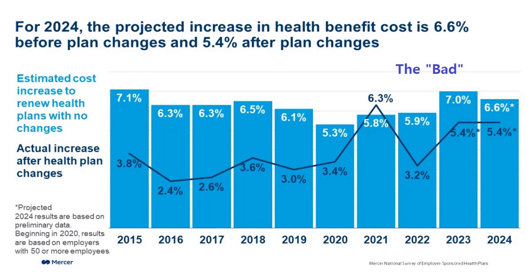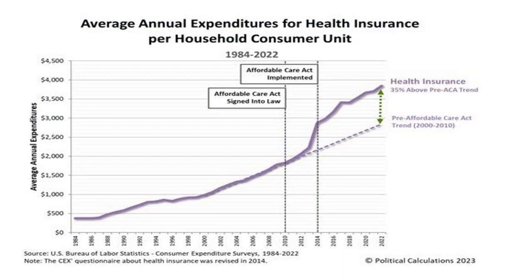Let's look at some of the bad. The bad is the premiums have gone up. The black line here is the actual, but people have been reducing their coverage in order to get the payments down, because the payments going into Obamacare and the premiums are not good. Looking at some more data here, you can see that the boost in insurance premiums is way above the trend line.